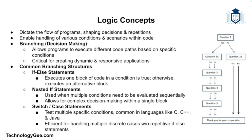Let's shift focus to logic concepts in programming. These concepts help dictate the flow of programs and define how decisions and repetitions are handled. The first is branching, or decision making, which allows a program to execute different blocks of code based on certain conditions. The most common branching concepts include if/else statements, which check a condition and execute one block of code if true and another if false.